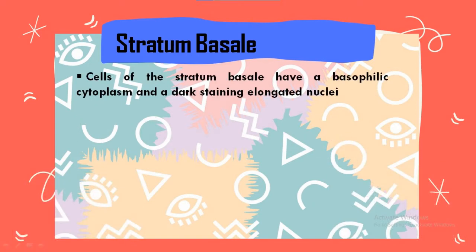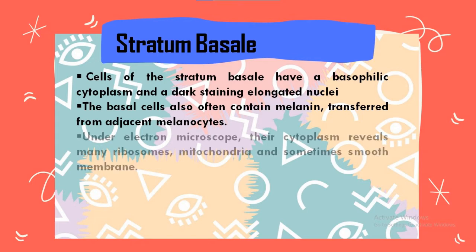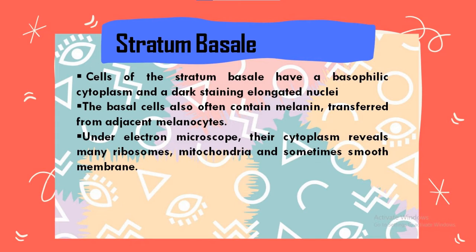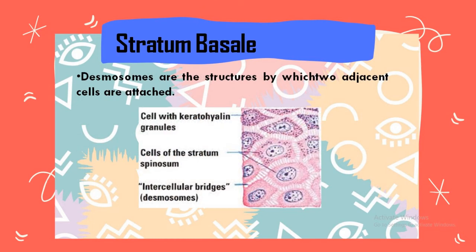Cells of the stratum basale have basophilic cytoplasm and dark staining elongated nuclei. The basal cells also often contain melanin transferred from adjacent melanocytes. Under the electron microscope, the cytoplasm reveals many ribosomes, mitochondria, and sometimes smooth membranes. Intracellular bridges, or desmosomes, connect basal cells with one another and with the overlying squamous cells. Desmosomes are structures by which two adjacent cells are attached, as shown in the pictures.